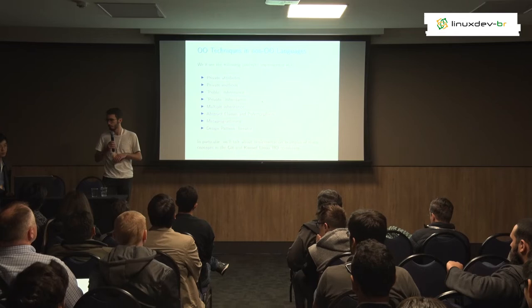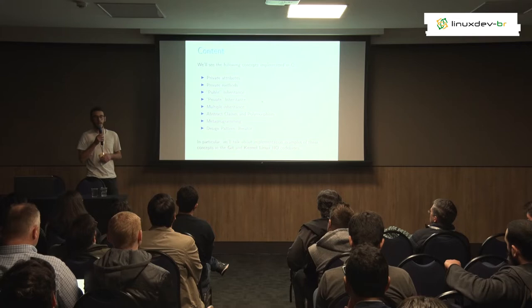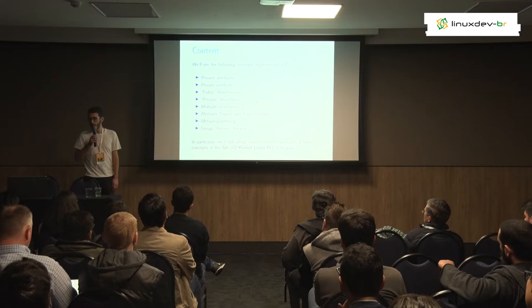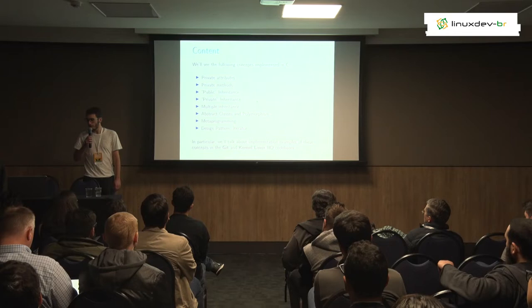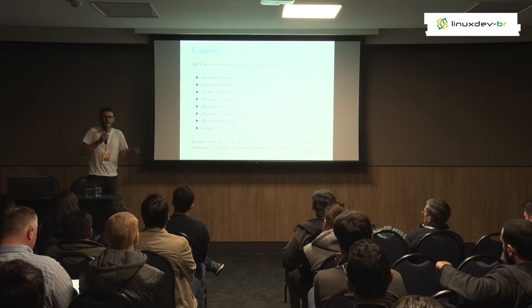This is the content we will go over today, hopefully. We will start with basic objects — private attributes and private methods. Then we'll go over inheritance, including what we call public and private inheritance, which are terms we define and will talk about later. We also have multiple inheritance, abstract classes, polymorphism, and then we'll touch on metaprogramming and one design pattern: the iterator.